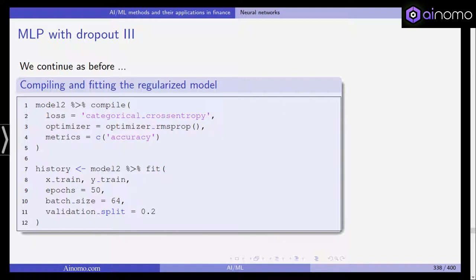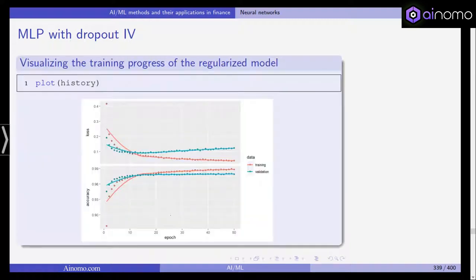Same optimizer as before, and to assess the accuracy, we use the accuracy metric. We fit the model with x_train, y_train, 50 epochs, batch size is 64, and the validation split is again 20% of our observations. This is the result. As you can see, as before we have a drop in the loss at first, and it still increases for the validation set, but it doesn't increase like this. Actually, this difference here and also the minimized difference between the accuracy in the training and in the validation set are the results of the regularization via dropout.